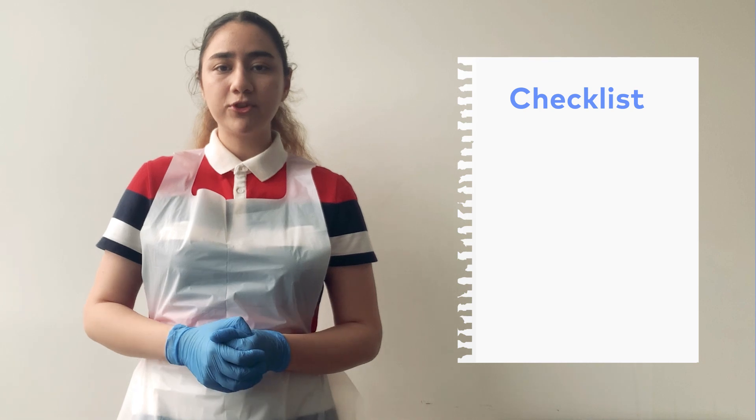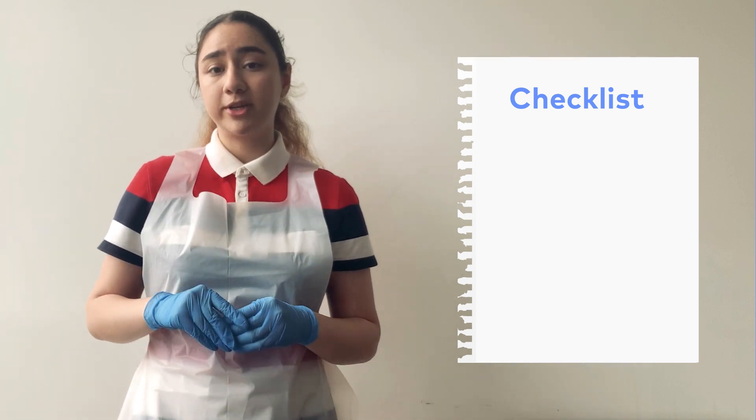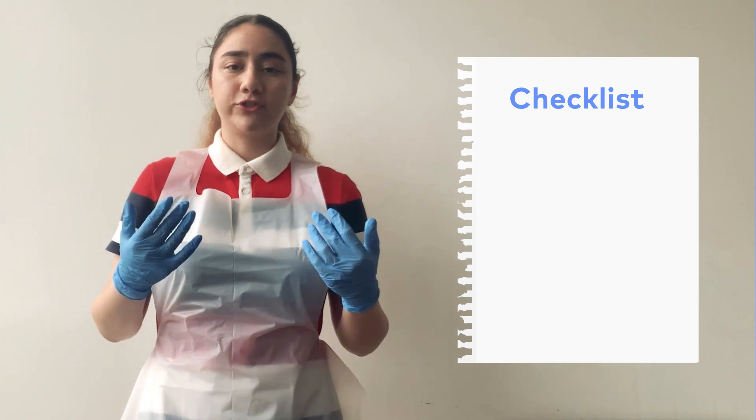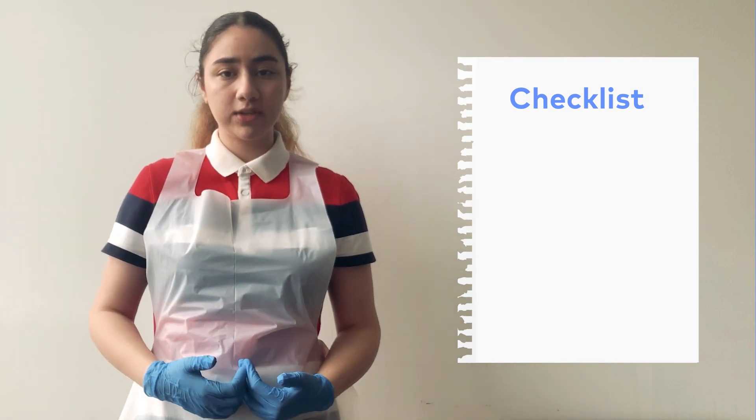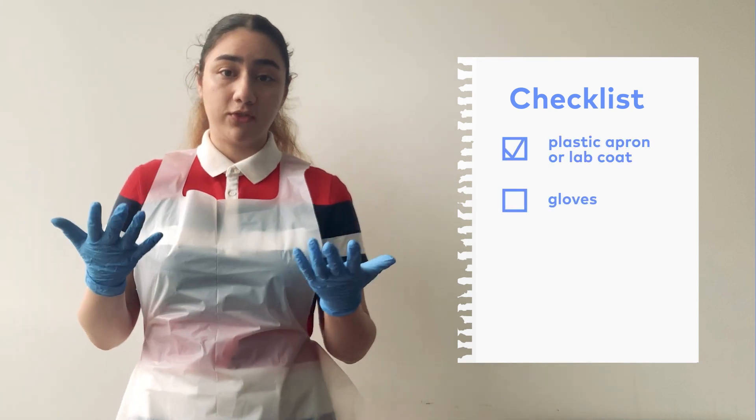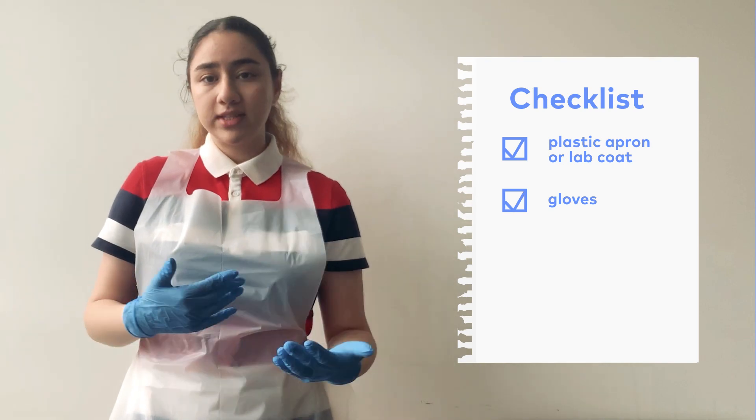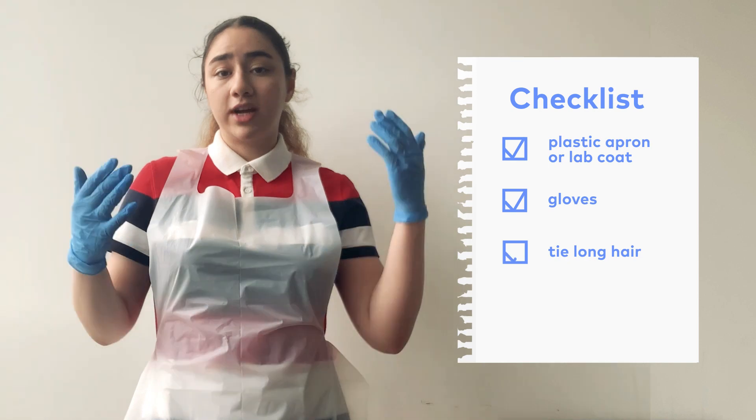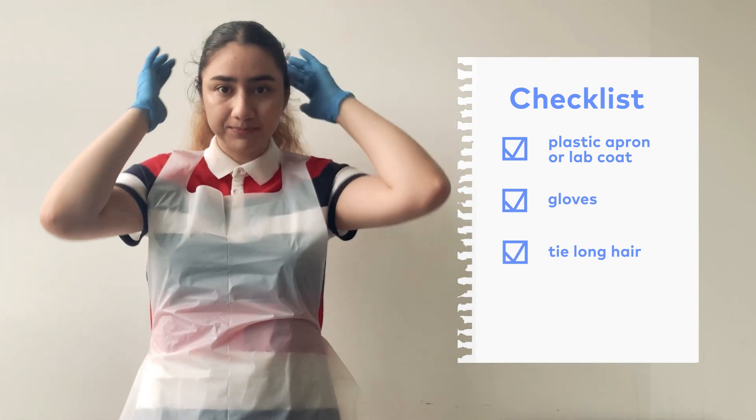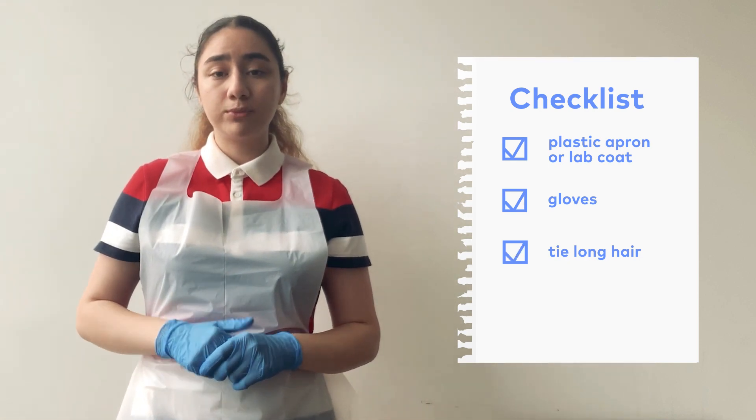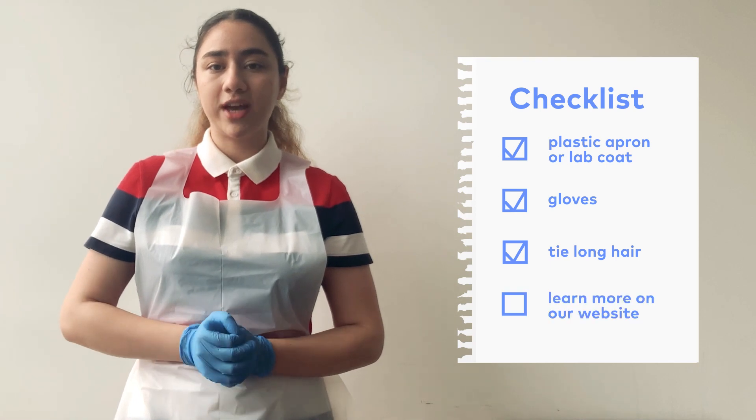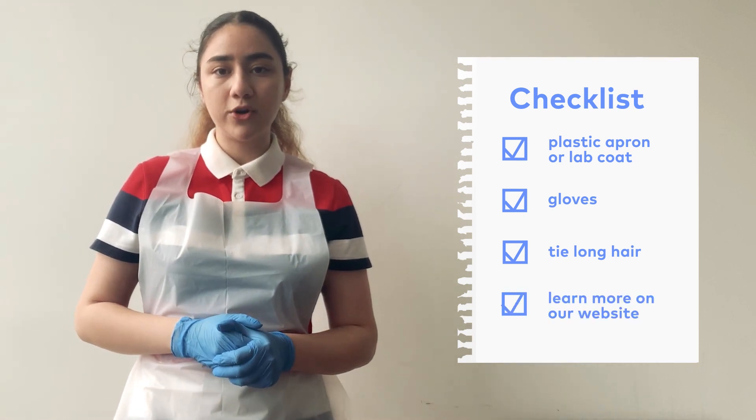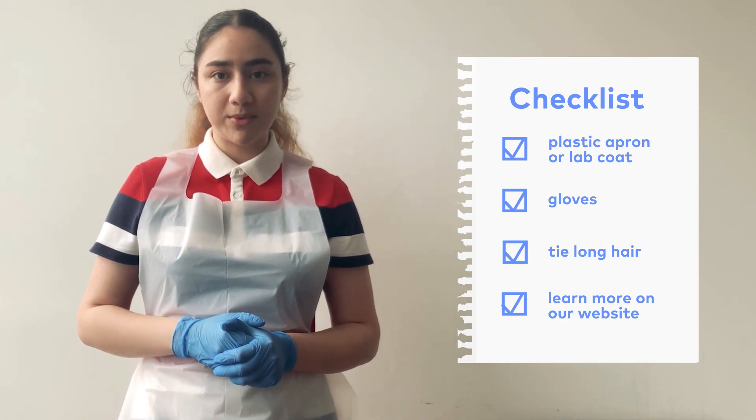The first step is safety. Before doing any scientific experiment, you need to make sure you are safe from the chemicals and chemicals are safe from you. So for today's video, you will need a plastic apron or a lab coat and a pair of gloves. You can find both of these at pharmacies, at drug marts, or order them online. And if you have long hair like me, please tie it back. To know more about safety and precautions, you can check out the links in the description box or check out our upcoming video about safety.